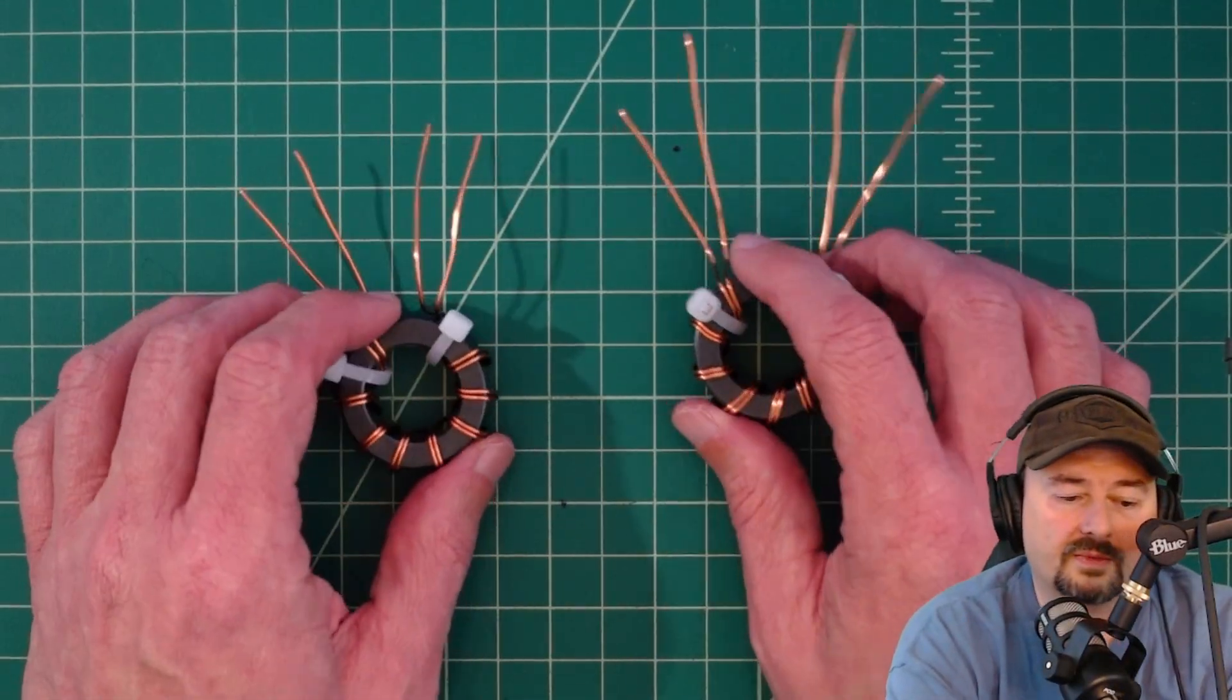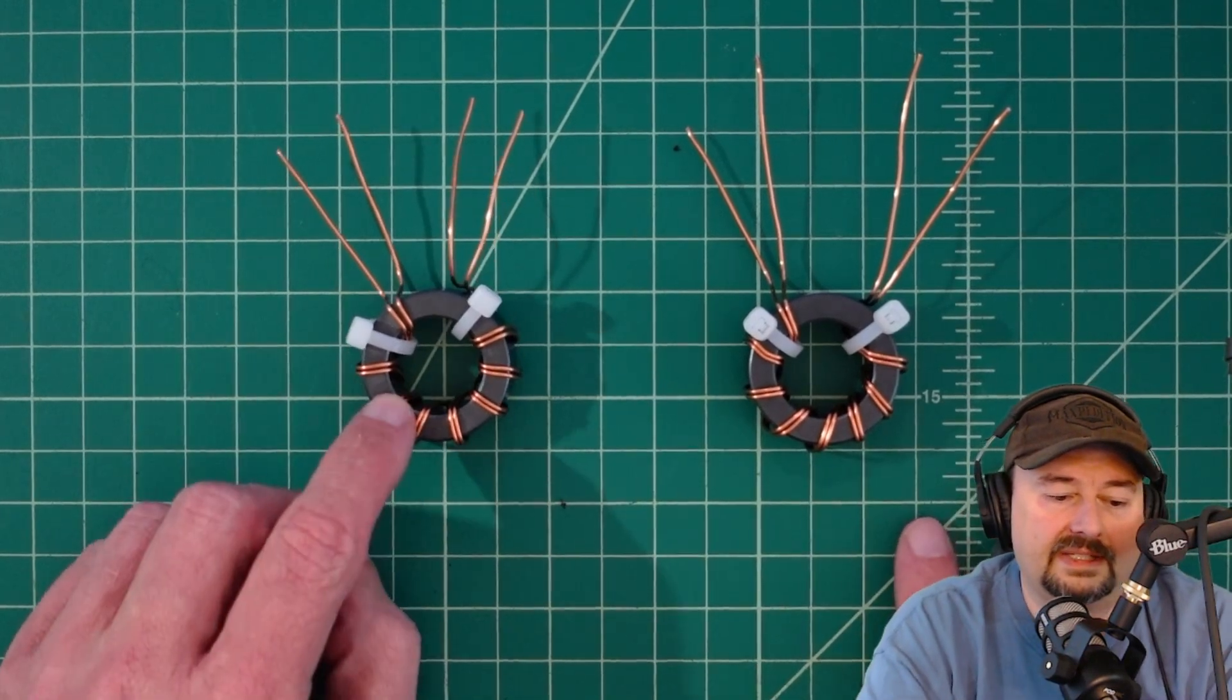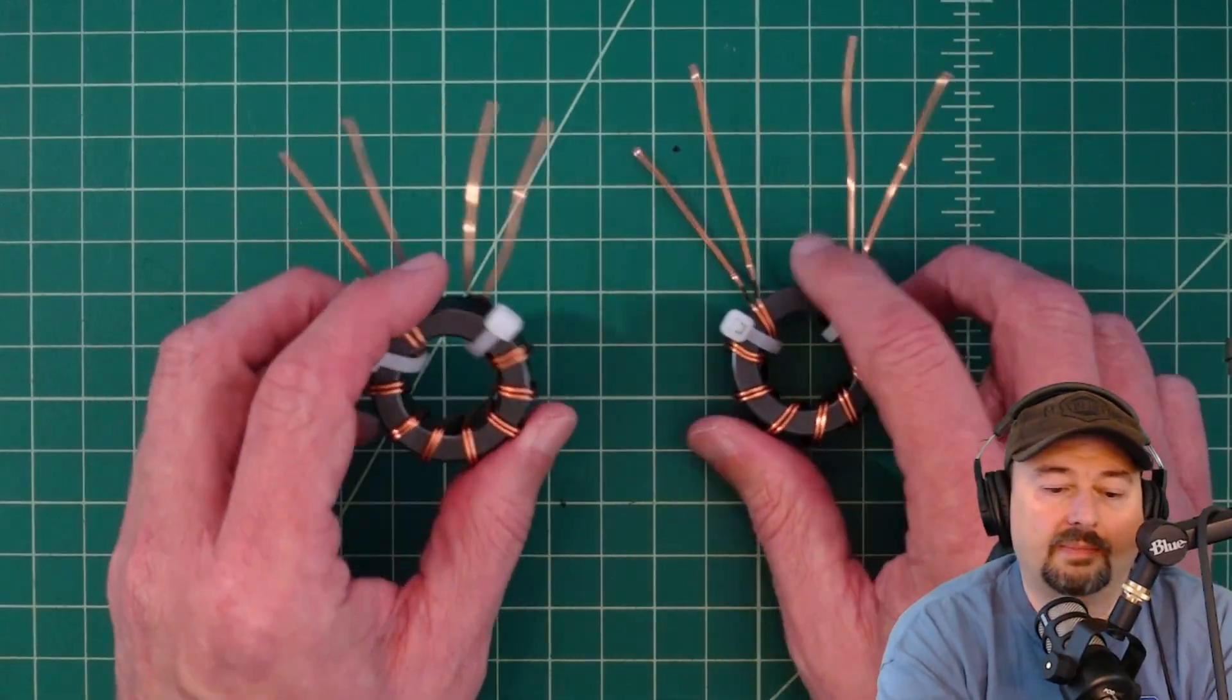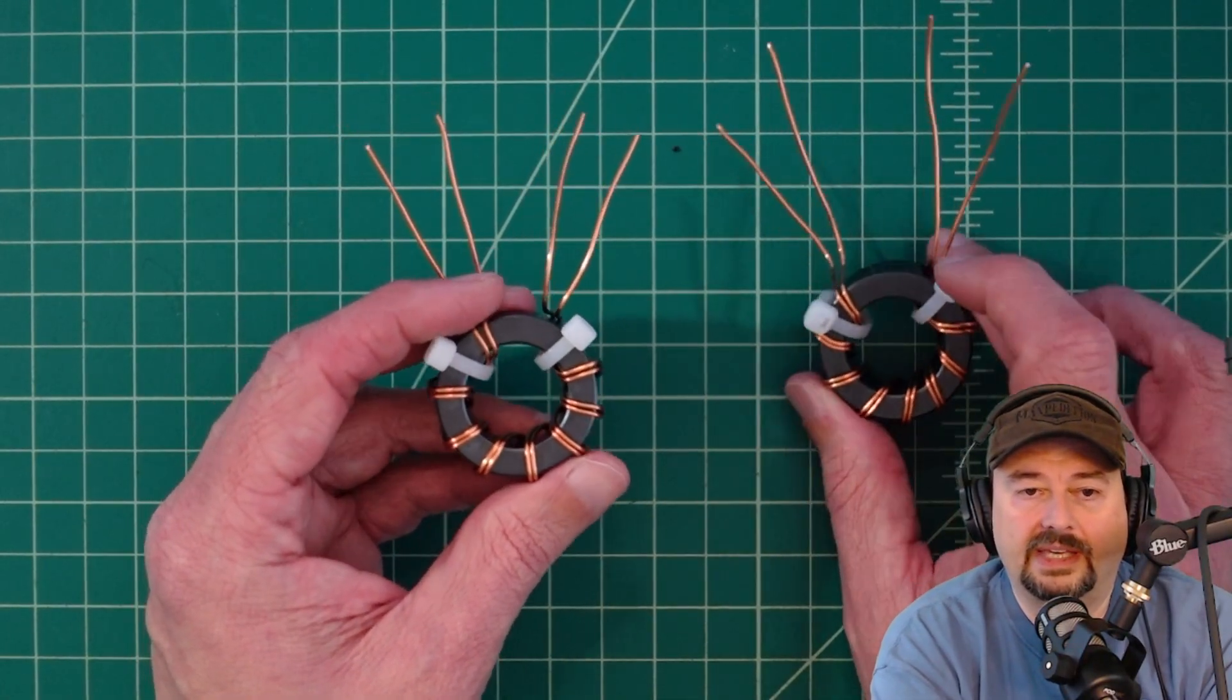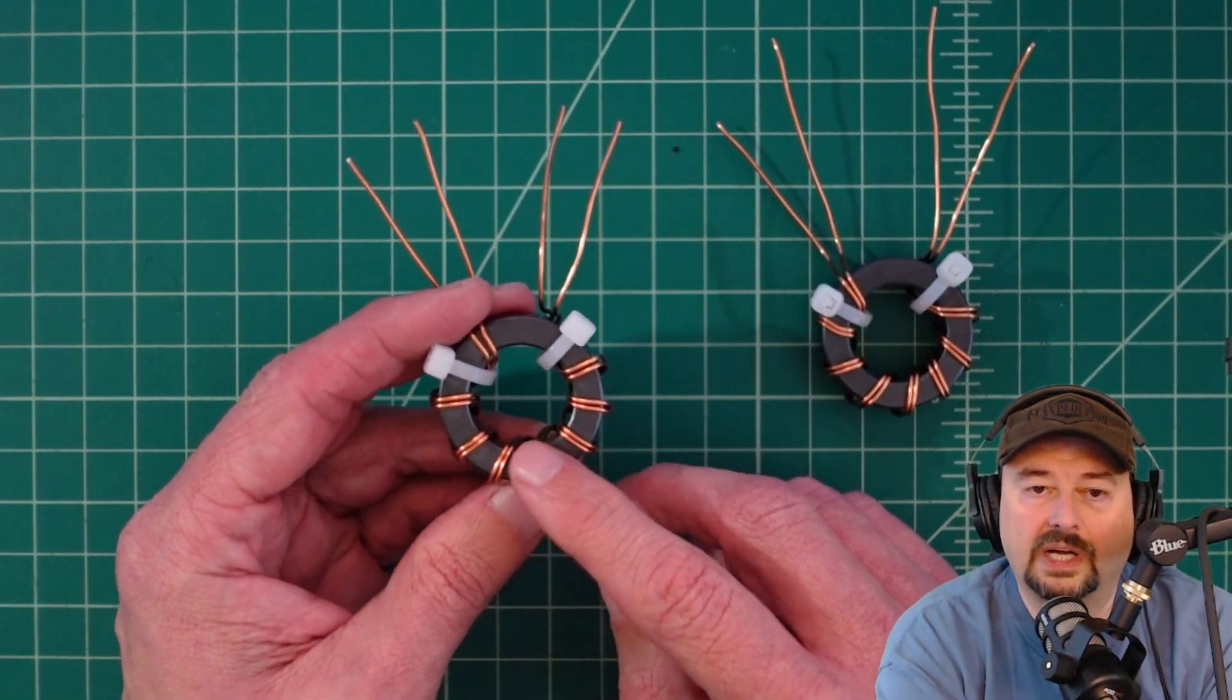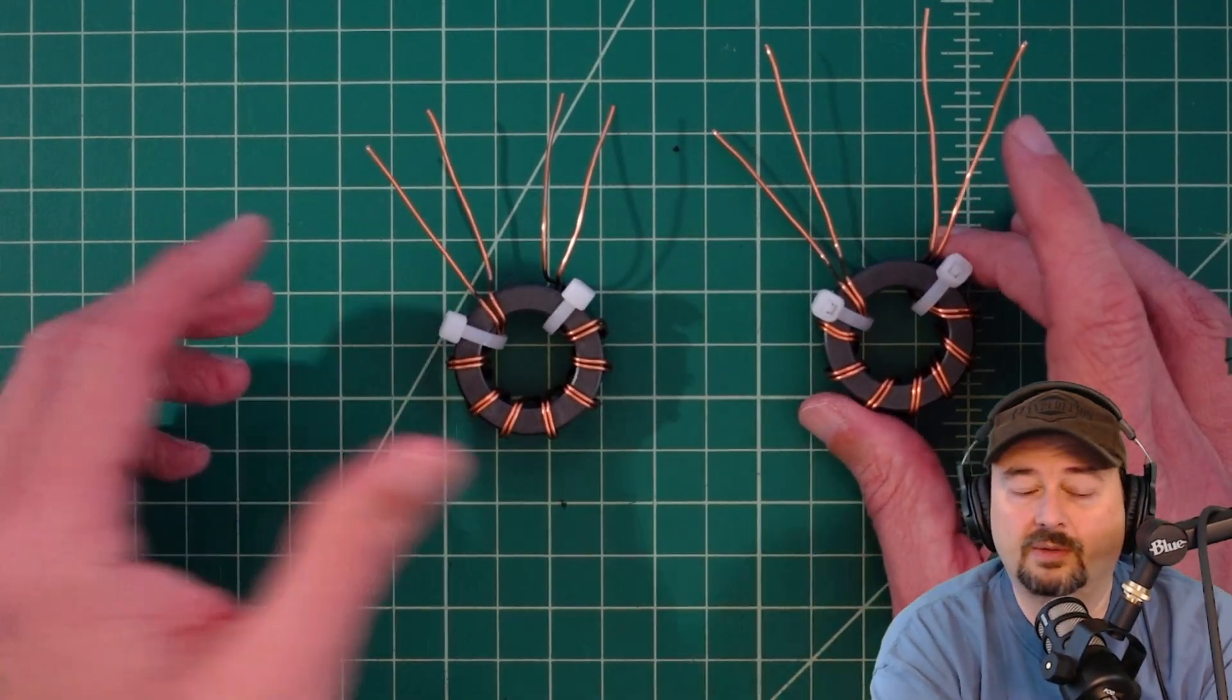Here are two cores and we're going to roll one in a balun configuration and one in an unun configuration. You start off the same way and the number of winds can make a difference. In this I've got eight winds on each one and I found that to work reasonably well.